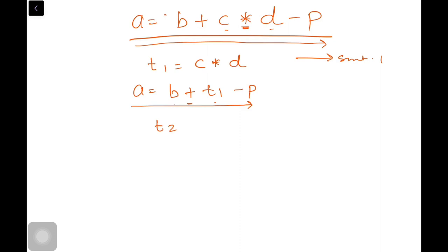Again, we have to rewrite our statement. When you check the operator with the highest precedence, how many operands has it? Two. So what will come? It will be t3 is equal to t2 minus p. This is your third statement.